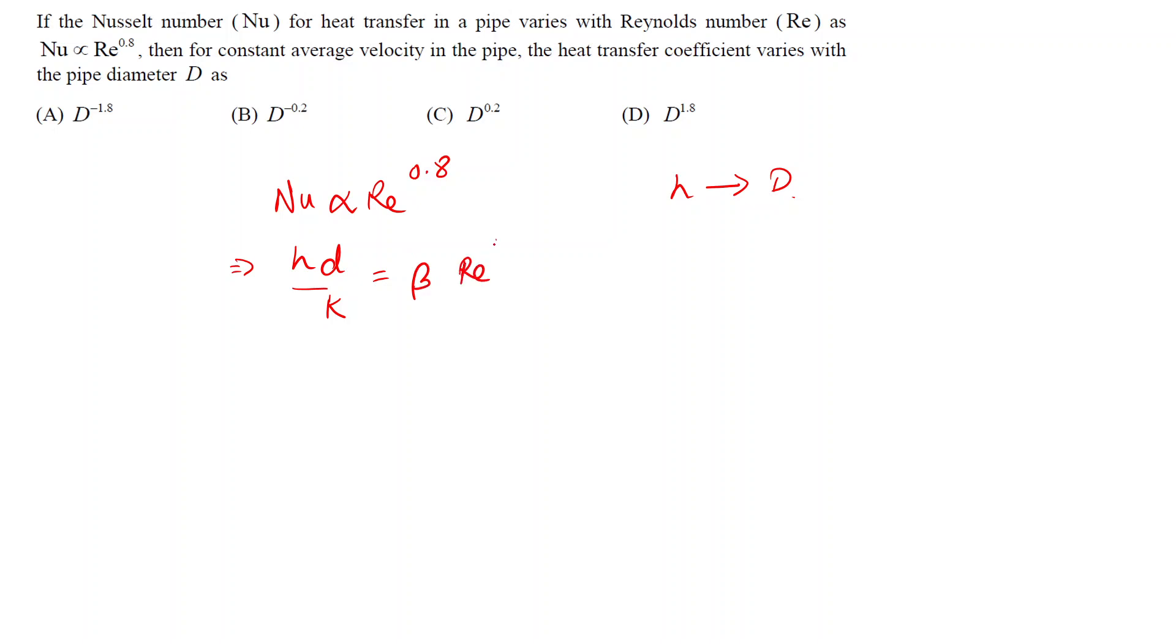This will be equal to beta times Re raised to 0.8, where beta is our proportionality constant. Now Reynolds number we can write as rho V D upon mu, where rho is the density, D is the diameter.